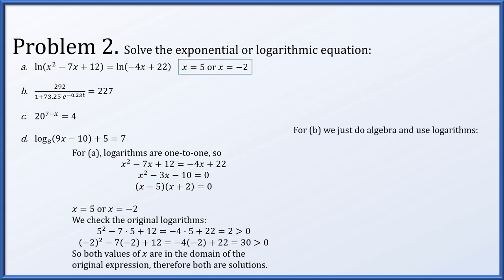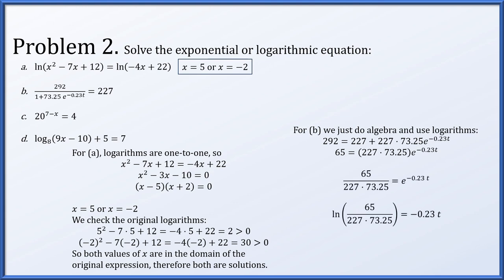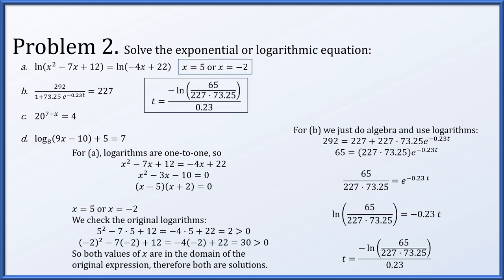For part b, we cross-multiply by the denominator (1 plus 73.25 times e to the negative 0.23t), giving 292 equals 227 plus 227 times 73.25 times e to the negative 0.23t. Subtracting 227 gives 65 equals 227 times 73.25 times e to the negative 0.23t. Dividing by that constant and taking the natural logarithm of both sides, then dividing by negative 0.23, yields t.